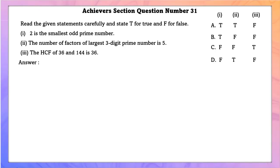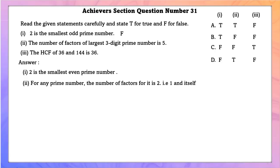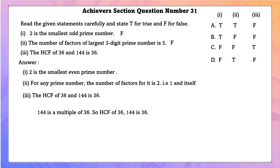Achieve section question number 31. Read the statements and mark T for true or F for false. Statement 1: '2 is the smallest odd prime number' — False, 2 is the smallest even prime number. Statement 2: 'The number of factors of the largest 3-digit prime number is 5' — False, any prime number has exactly 2 factors. Statement 3: 'The HCF of 36 and 144 is 36' — True, since 144 is a multiple of 36. Only the third statement is true.